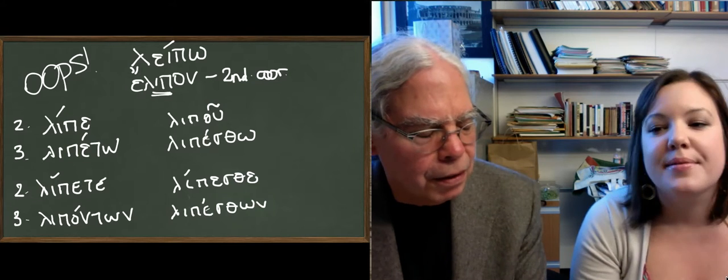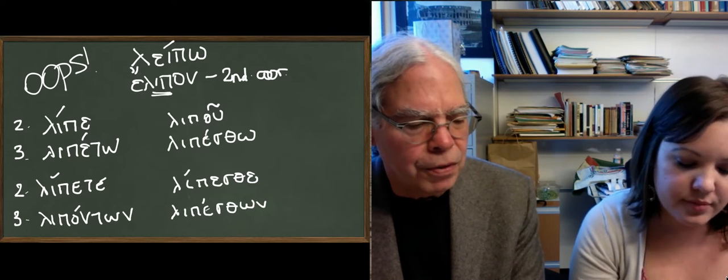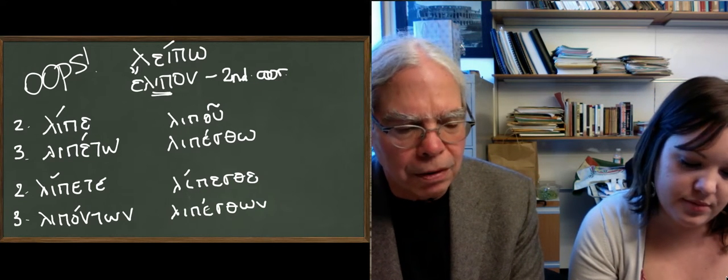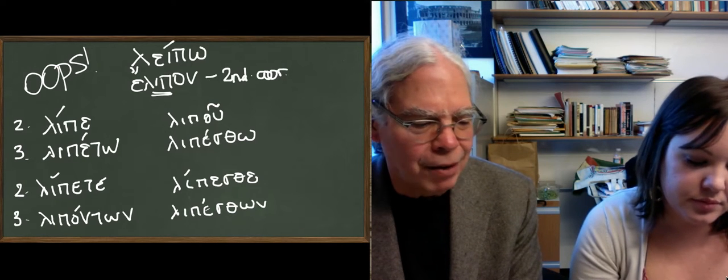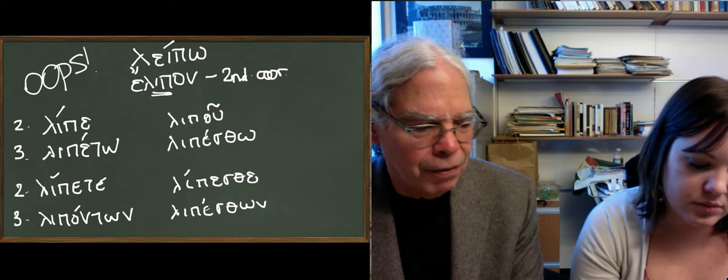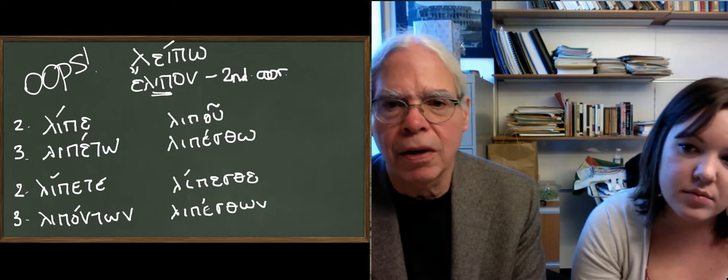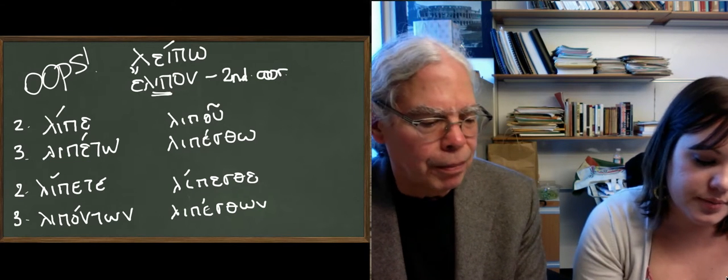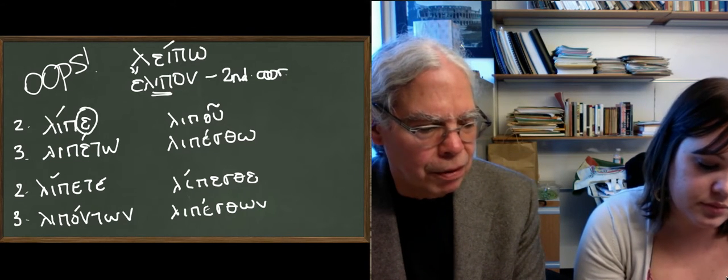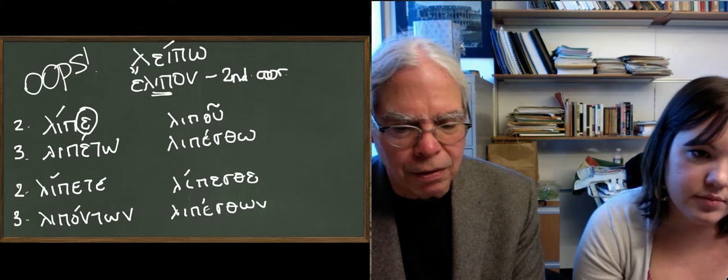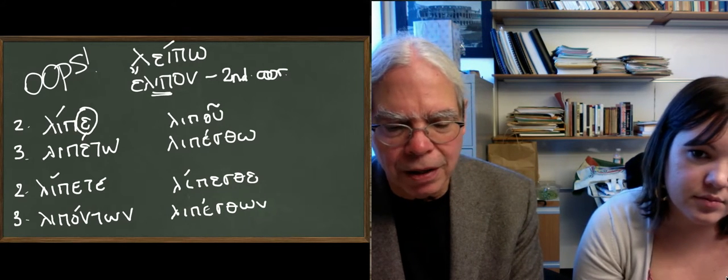The one thing that's important to know is that there is a small group of very old second aorist verbs - we haven't had very many of them - that have a funny accent, that have an accent on the epsilon. There's the verb to take, which I guess we haven't had yet.